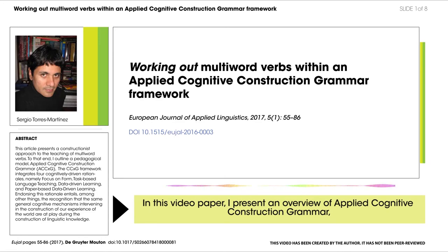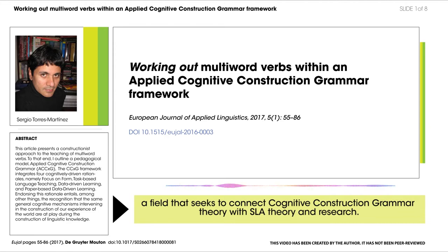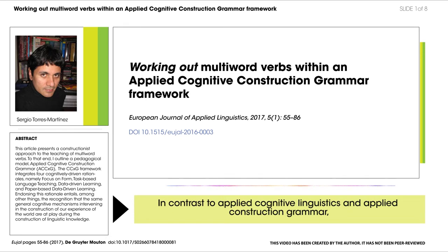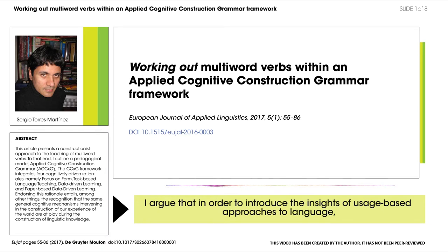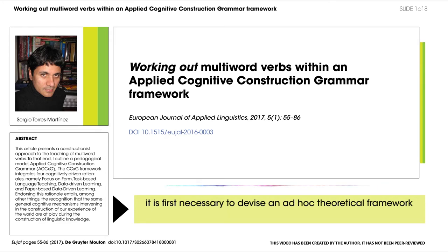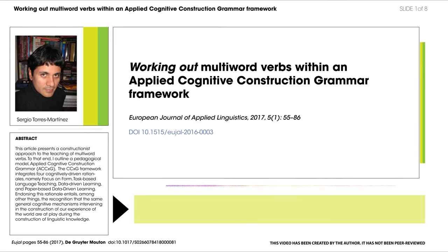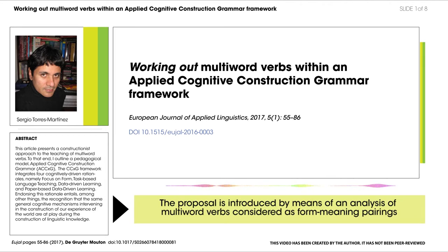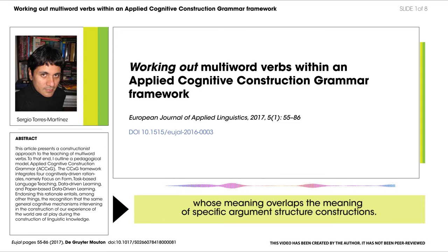In this video paper, I present an overview of Applied Cognitive Construction Grammar, a field that seeks to connect Cognitive Construction Grammar theory with SLA theory and research. In contrast to Applied Cognitive Linguistics and Applied Construction Grammar, I argue that in order to introduce the insights of usage-based approaches to language, it is first necessary to devise an ad-hoc theoretical framework that provides the pedagogical underside to L2 instruction. The proposal is introduced by means of an analysis of multi-word verbs considered in its four meaning pairings whose meaning overlaps the meaning of its specific argument structure constructions.